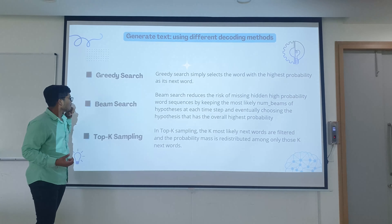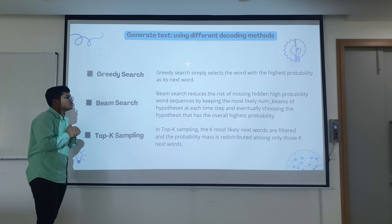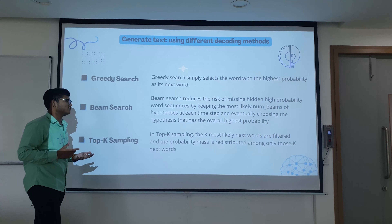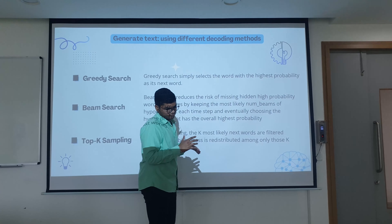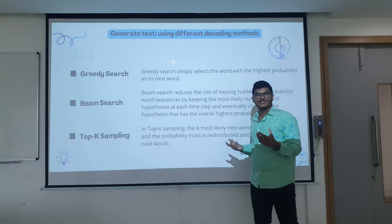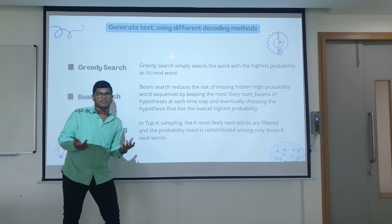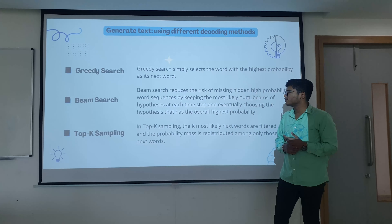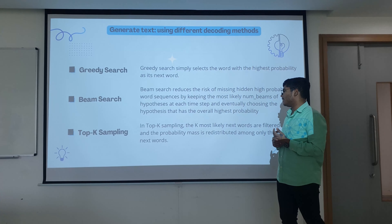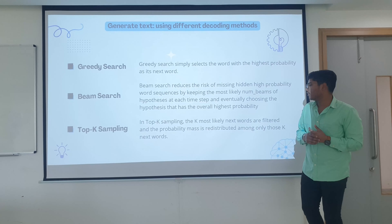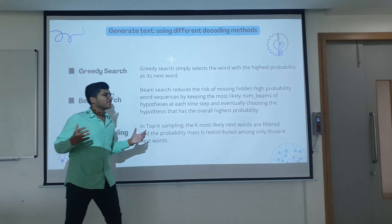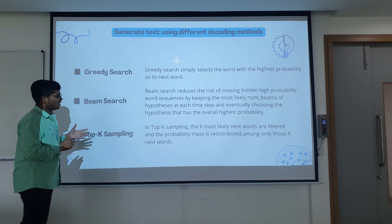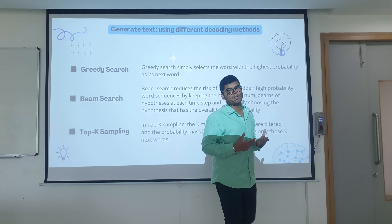Beam search reduces the risk of missing high-probability word sequences by keeping a set number of hypothesis beams at each time step, eventually choosing the hypothesis with the overall highest probability. It is a tree-and-graph-based probability algorithm. Top-k sampling filters the most likely next k words and redistributes the probability mass among only those k words, forming a cluster and recalculating probabilities. Across all these techniques, the key game is probability.